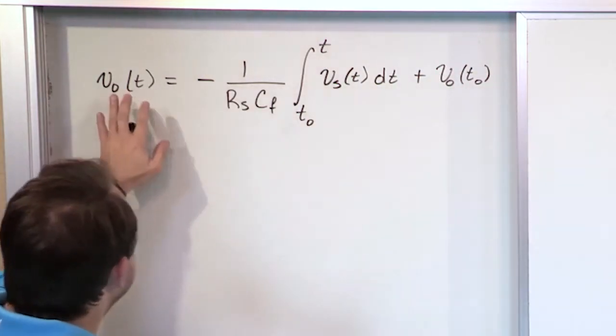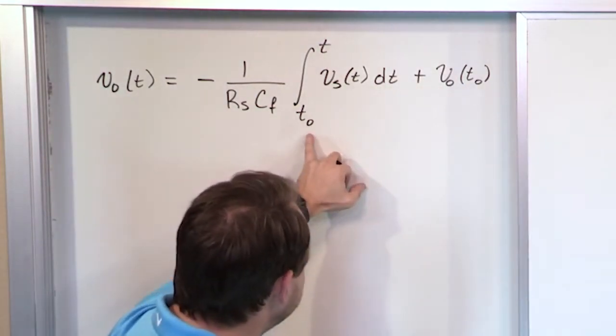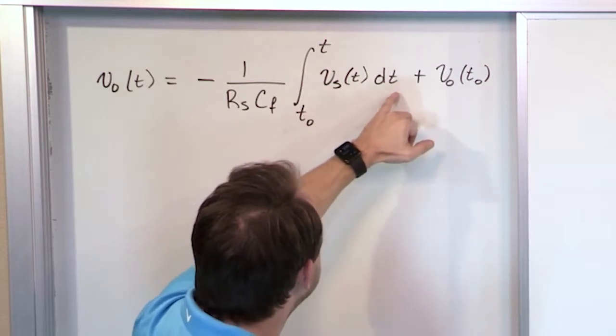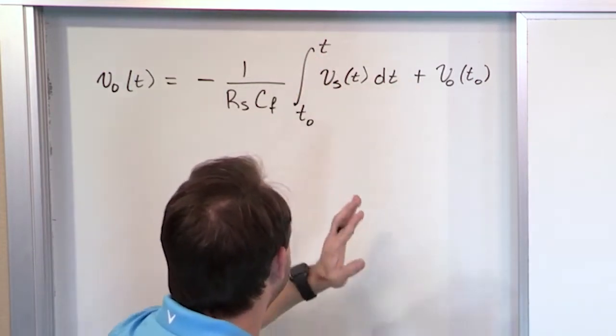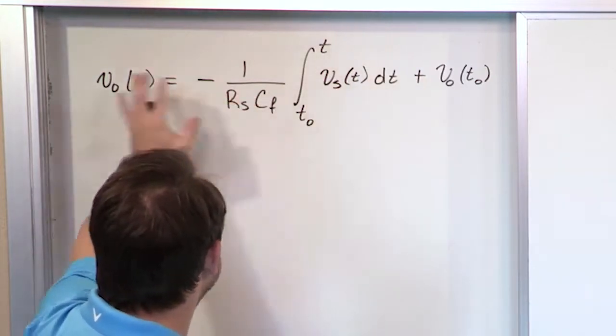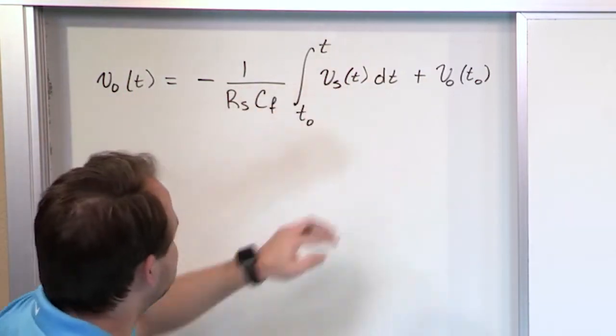So again, in words, the output of this guy is going to be the initial output at time zero, that's where we're starting, plus whatever the area under this curve is up to this point in time T. That's where we stop it. The integration is finished up to that point, and that's the output voltage at that instant of time T.